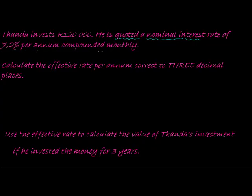We're going to be working with months, so we're going to have to divide everything by 12. Calculate the effective rate per annum correct to three decimal places. Remember the question I said we should ask: what will happen?